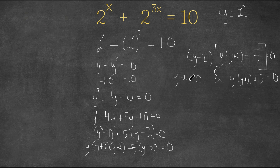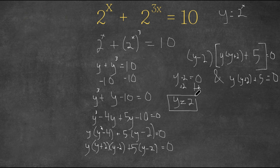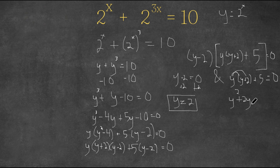Let's solve our first one. This one is really simple — we simply add 2 on both sides to isolate y and we get y is equal to 2. For our next solution, let's start by distributing y to y plus 2. So we get y squared plus 2y plus 5 equals 0.